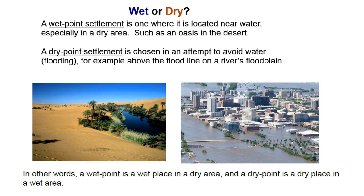Another thing we have to look at with settlement is whether it's a wet or a dry point settlement. These are two definitions we need to know, and this often comes up in map work. A wet point settlement is one located near water — like a dry area where there's a river flowing through, or an oasis in the desert. A dry point settlement is an area chosen to be away from water or potential flooding. In a nutshell: a wet point is a wet place in a dry area, and a dry point is a dry place in a wet area, normally a high-lying area.